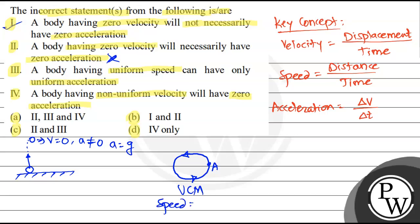UCM matlab kya? Iska speed kya hai? Same hai, speed is uniform. Speed uniform. Abhi dekhi A point pe velocity kya hogi is taraf, agar yeh particle idhar pahuncha to iske velocity idhar hogi, yeh particle idhar pahuncha iske velocity yeh hogi.